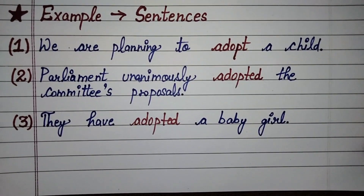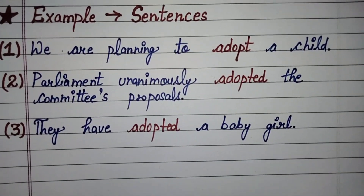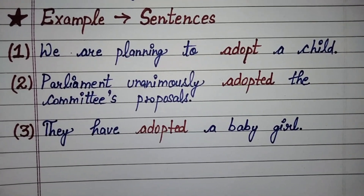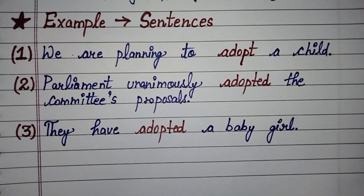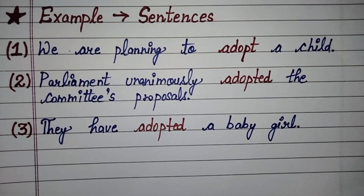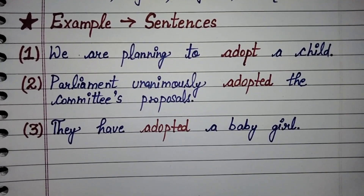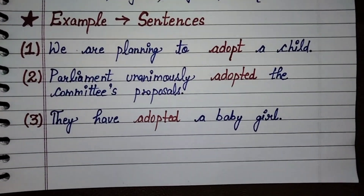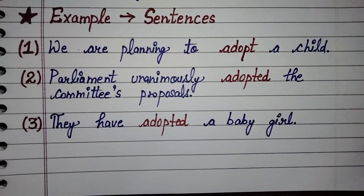Second sentence is: Parliament unanimously adopted the committee's proposals. So Parliament ne unanimously — unanimously hota hai sarv sammati se, yaani ki sab ki sammati se — committee ke proposal ko adopt kar liya, apna liya. And the third sentence is: they have adopted a baby girl, yaani ki unhone baby girl ko adopt kiya hai, godh liya hai.